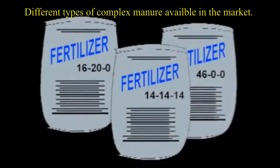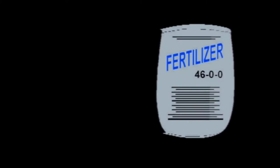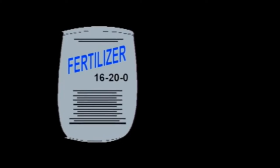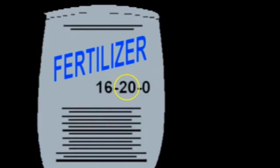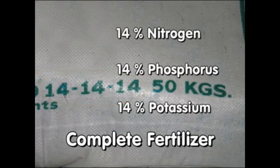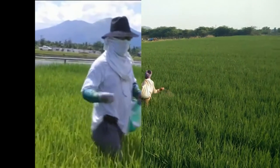Different types of complex manure are available in the market. For example, 16-20-00 indicates 16% nitrogen, 20% phosphorus, and 0% potassium. 14-14-14 means 14% each of nitrogen, phosphorus, and potassium — making it a complete fertilizer. See how the fertilizer is distributed in the rice fields.